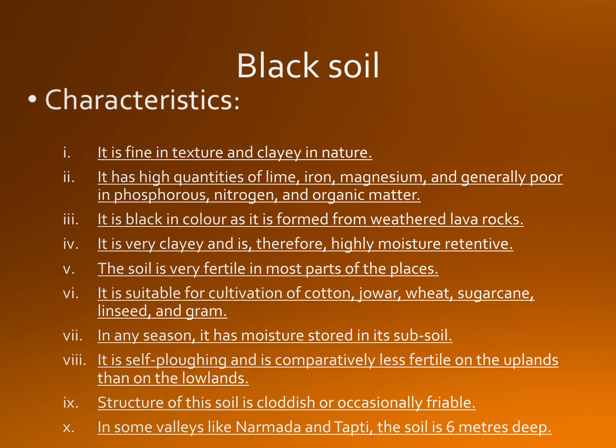It is suitable for cultivation of cotton, jowar, wheat, sugarcane, linseed, and gram in any season. It has moisture stored in its subsoil. It is self-plowing and is comparatively less fertile on the uplands than on the lowlands. The structure of the soil is cloddy or occasionally friable. In some valleys like Narmada and Tapti, the soil is 6 meters deep.